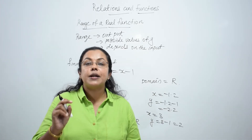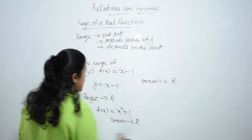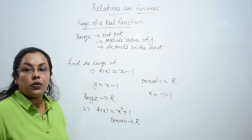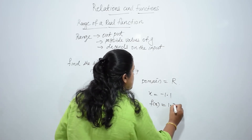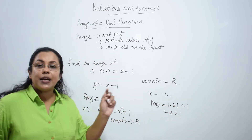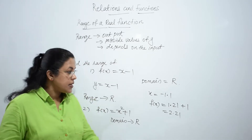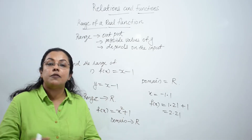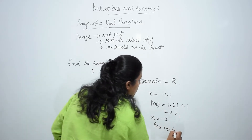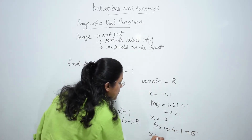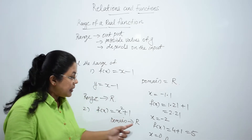The domain is from minus infinity to plus infinity. What about its range? If we put x = -1.1, then f(x) = (-1.1)² + 1 = 1.21 + 1 = 2.21. If we put any value to x, whether it is negative or positive, the value of f(x) is always positive. If x = -2, then f(x) = 4 + 1 = 5. If x = 0, then f(x) = 1. So the minimum value is 1.